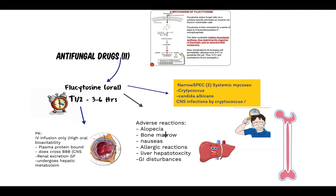Flucytosine has a plasma half-life of 3 to 6 hours and very high oral bioavailability, so it is given orally. It is bound to plasma proteins and does cross the blood-brain barrier, penetrating the CNS at around 60 to 80%. It is excreted renally via glomerular filtration and undergoes hepatic metabolism. Adverse reactions include alopecia — hair loss around the body, skin, and lower extremities.